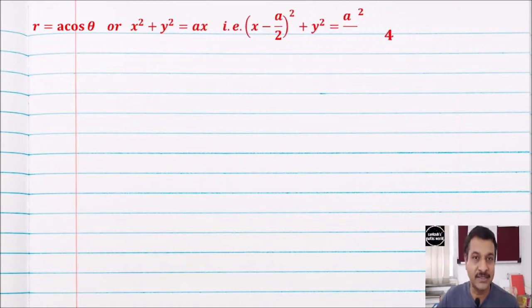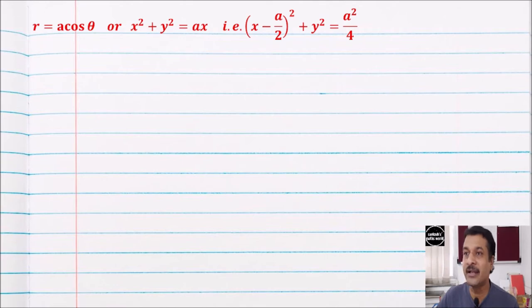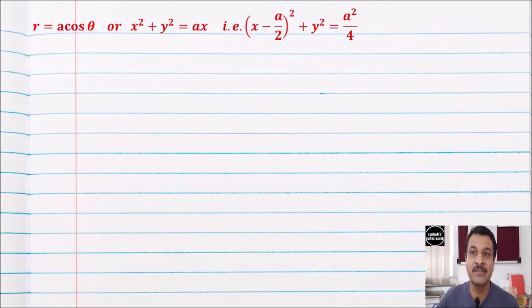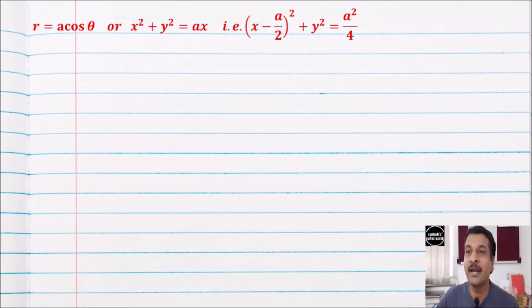The first curve is r = a cos θ in polar form. If we convert it to Cartesian form, we get x² + y² = ax, which simplifies to (x − a/2)² + y² = a²/4. This means r = a cos θ is a circle with radius a/2 and centre at (a/2, 0).